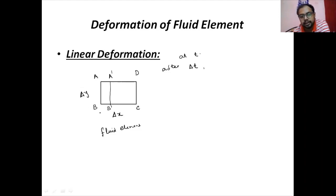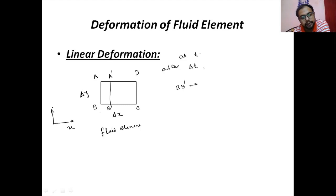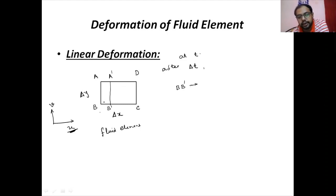How much displacement occurred? From B to B', how much displacement occurred? Along the x-axis the velocity is u, along the y-axis the velocity is v. We are just considering the along x-axis condition. So along x-axis, AB is displaced by u times delta t. So this distance is u into delta t.